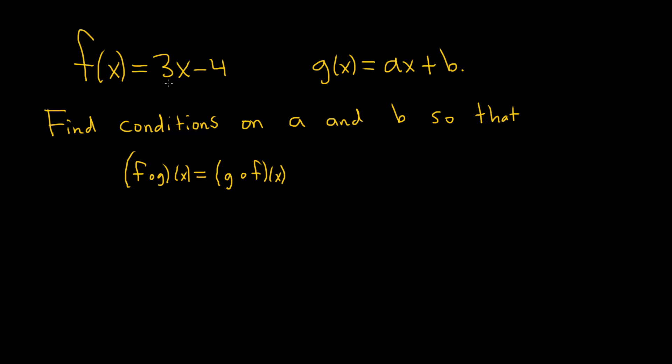Hi everyone. In this problem we have two functions, f of x equals 3x minus 4 and g of x equals ax plus b. And the question is to find conditions on a and b so that the function compositions actually commute. Kind of an interesting problem. I haven't done it yet so this will be kind of interesting.